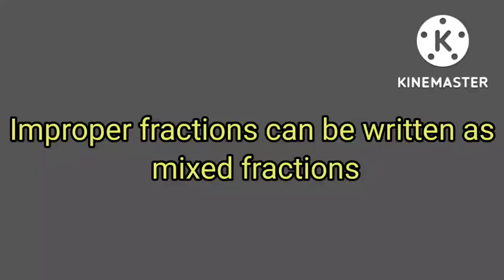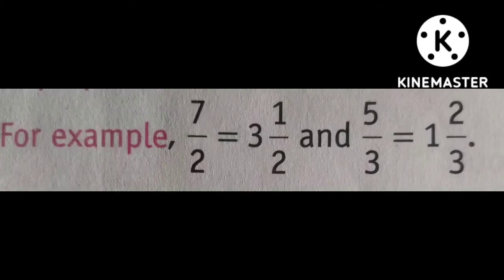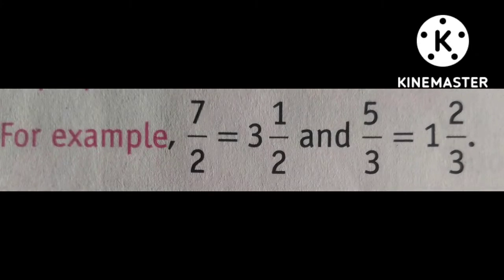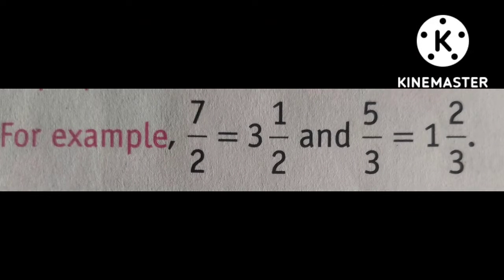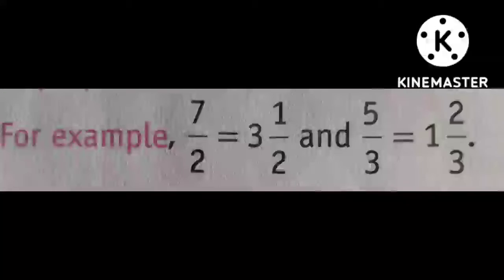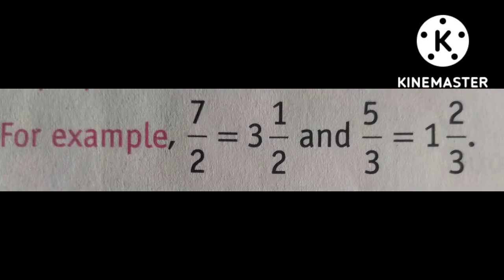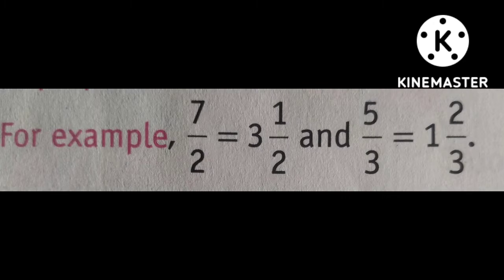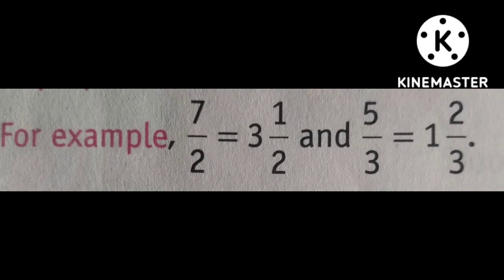Improper fractions can be written as mixed fractions. For example, 7/2 is equal to 3 and 1/2, and 5/3 is equal to 1 and 2/3.